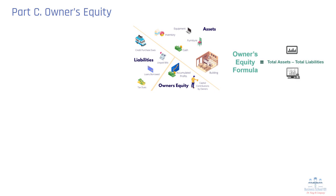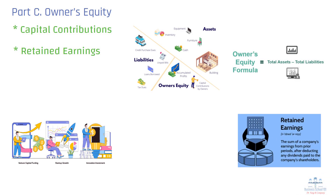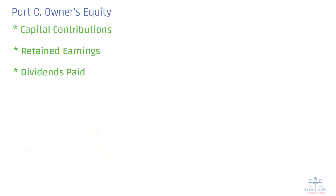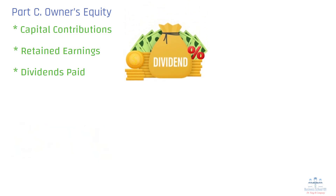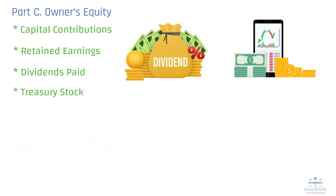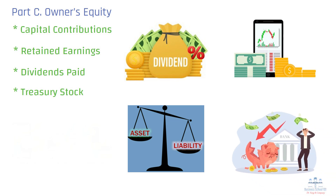Components of owner's equity include: capital contributions — money invested by business owners, partners, or shareholders, including common stock and preferred stock in corporations; retained earnings — profits the company keeps and reinvests instead of distributing as dividends, with high retained earnings indicating ability to fund future growth; dividends paid — the portion of earnings distributed to shareholders, which reduces retained earnings; and treasury stock — shares repurchased from the stock market, held by the company and not counted as outstanding. If a company has more liabilities than assets, owner's equity may become negative, a situation known as insolvency, which can lead to bankruptcy.